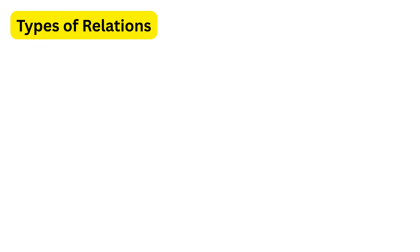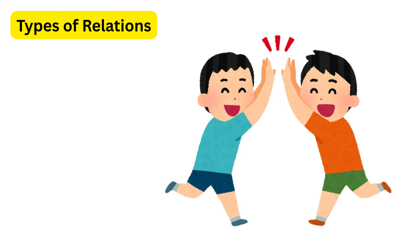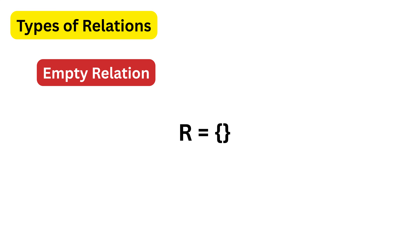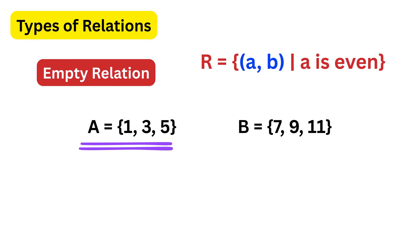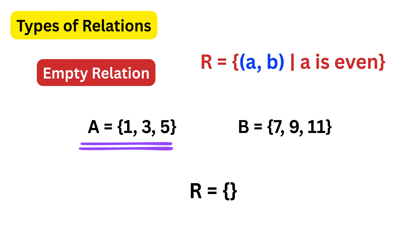Let's talk about the different types of relations, which is a very important concept. First we have the empty relation, which is a relation that has no pairs at all. Imagine set A contains the numbers 1, 3, and 5, and set B contains 7, 9, and 11. We define a relation where a number from set A is connected to a number from set B only if the number from set A is even. Since all numbers in set A are odd, no ordered pairs can be formed. This is a perfect example of an empty relation — the sets exist but the relation contains nothing.